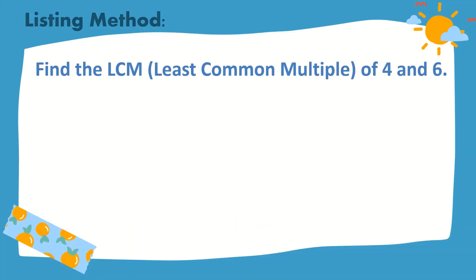At this time, let's find the LCM or Least Common Multiple of 4 and 6 using the Listing Method. Writing the multiples of 4 is just like reciting the Times Table of 4. So, what are they? We have 4, 8, 12, 16, 20, 24,